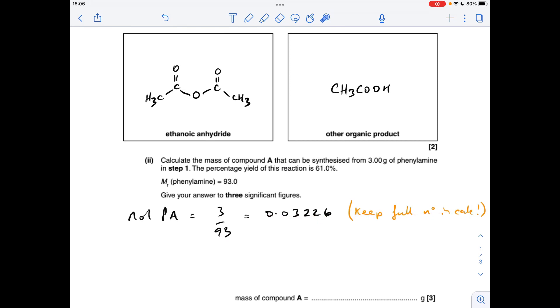So the moles of A that would form would be the moles of phenylamine multiplied by 0.61, which is 61 percent. So that's how many moles will actually make. Again, the full numbers in the calculator.